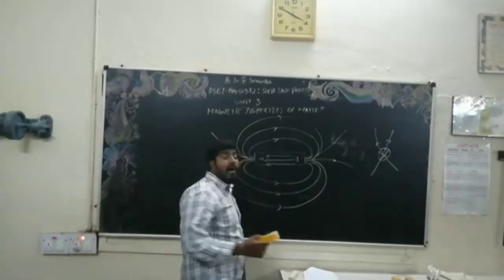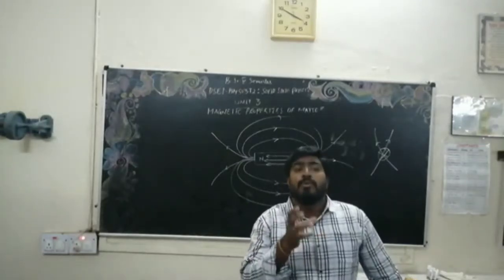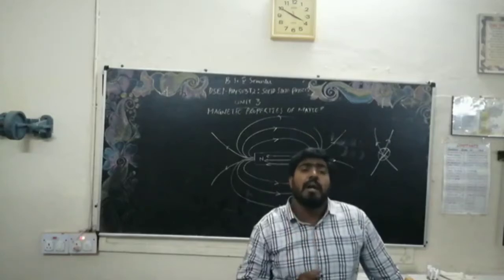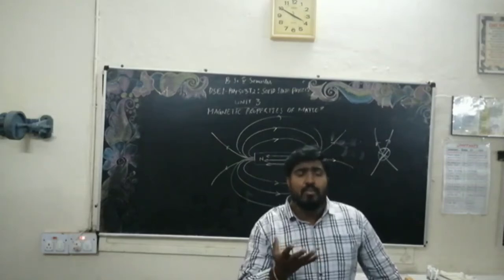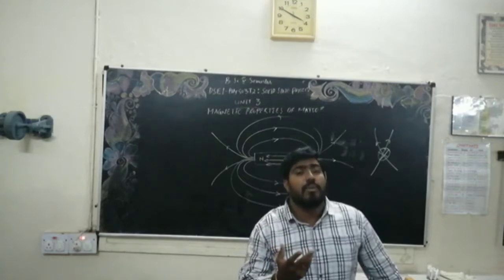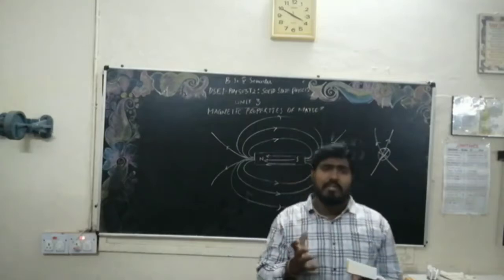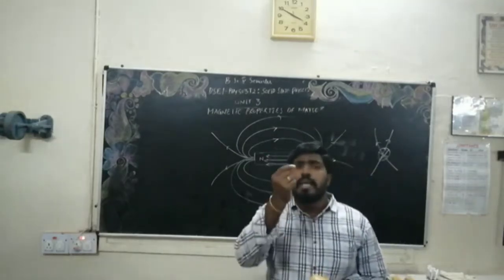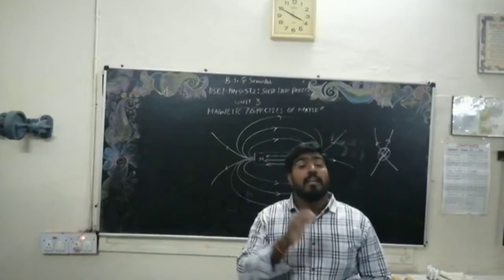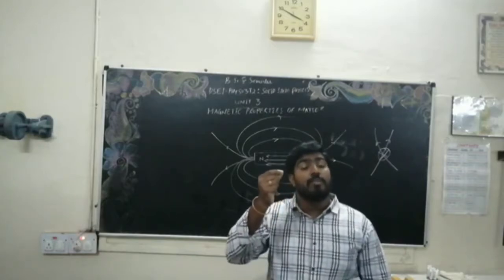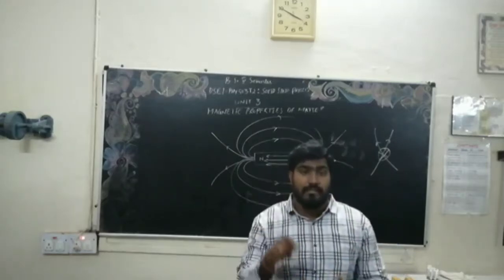Now we shall talk about how magnetic materials are going to attract — it is due to the magnetic moment. What do we mean by magnetic moment? A material consists of a large number of atoms. Each atom should possess a magnetic moment. We have to get the net magnetic moment of the overall material — this is at the atomic scale level.